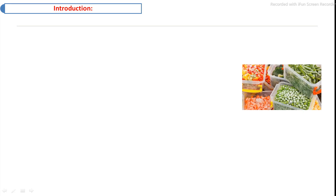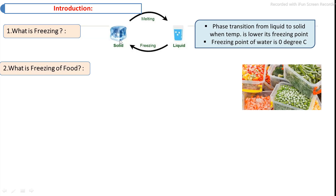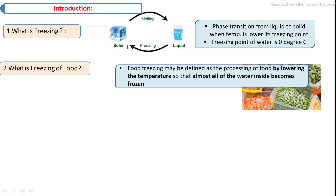What is meant by the freezing process? Freezing means water is converted to ice — liquid is converted to solid. When food is stored below its freezing point temperature, the water contained in that food is converted into ice. This is called the freezing process.